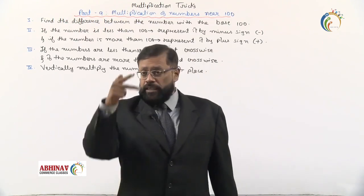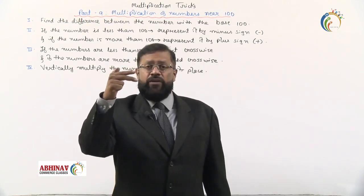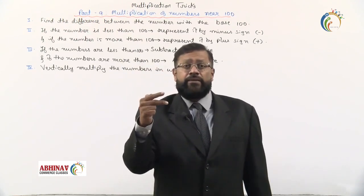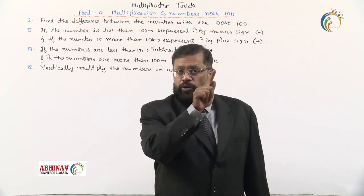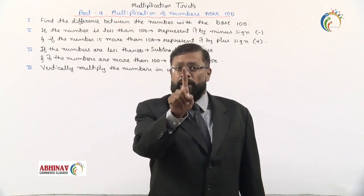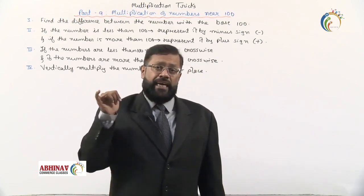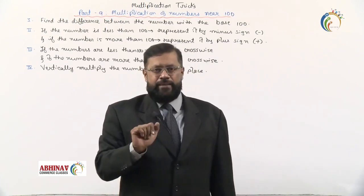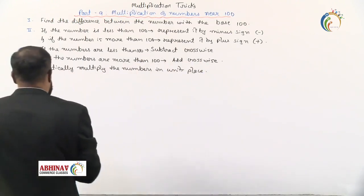In the last example with base 10, when you multiply the units place, say 5 times 5 equals 25, you write 5 and carry 2 because the base was 10, so only one digit is allowed. Here the base is 100, so two digits will be allowed.